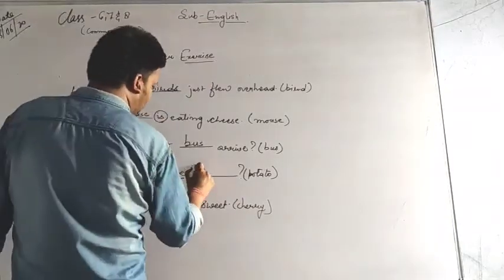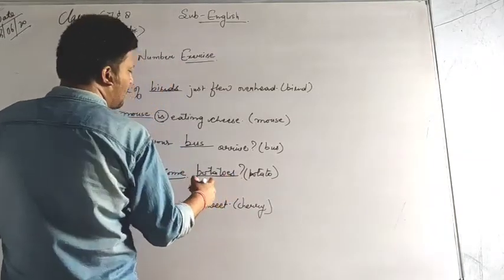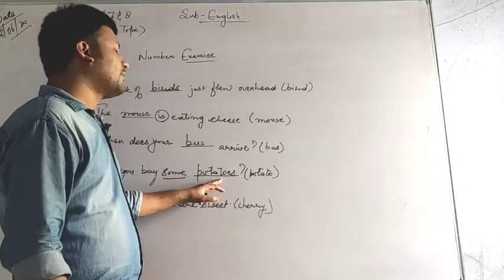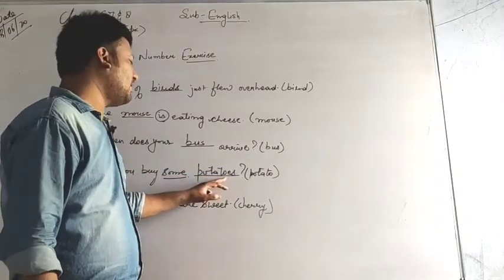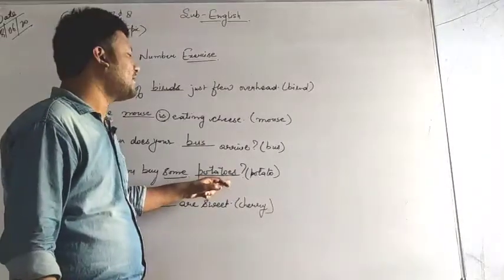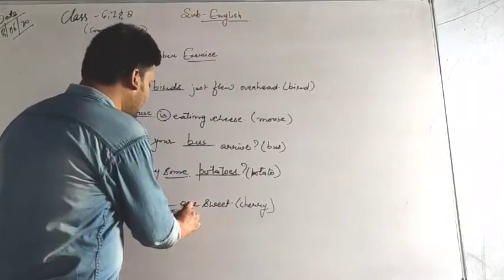So I will write P-O-T-A-T-O-E-S potatoes. Why E-S? Because the word is ending with O and it is having a consonant before it. As per the rule, if the word ends with O, X, CH, SS, SH, and Z, I use E-S.